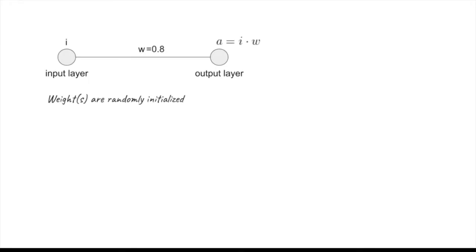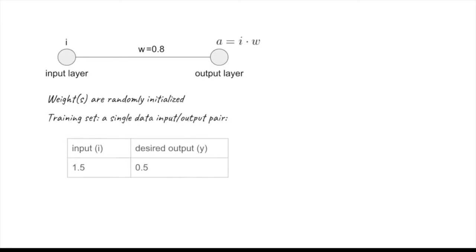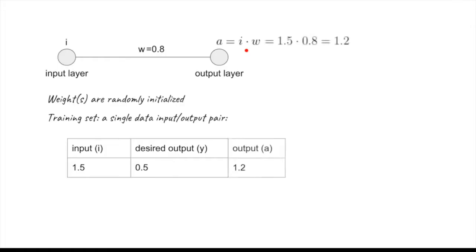The weight is randomized as per usual, and for a training set we use a single data input-output pair. For the input value 1.5, we would like the output activation to be 0.5. With the random weight, the output is 1.2, so there is some work to be done.